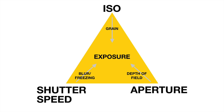These are the three legs to the table, and you have to know how to use each one. Sure, you can cheat and get by with auto for a while, and you might feel comfortable that you've stepped up to aperture priority or shutter priority. But ultimately, you need to know how to shoot manual.